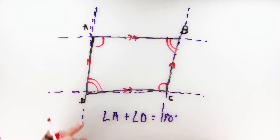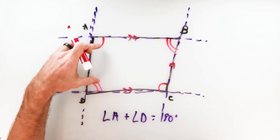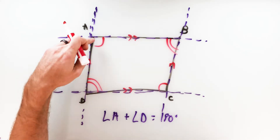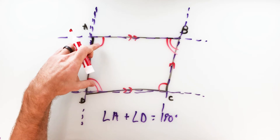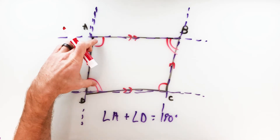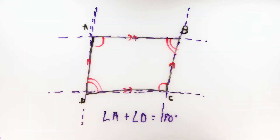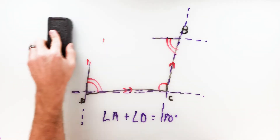So we have two related results here: opposite angles are congruent, and consecutive angles — angles on the same side — are always supplementary. That's property number two.